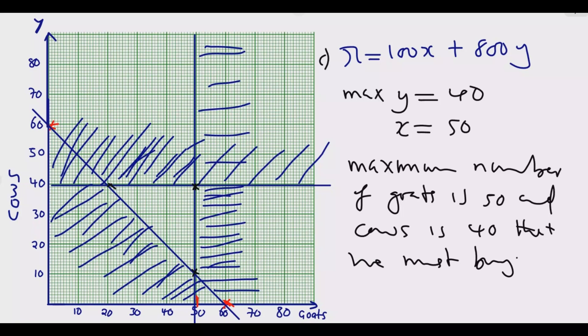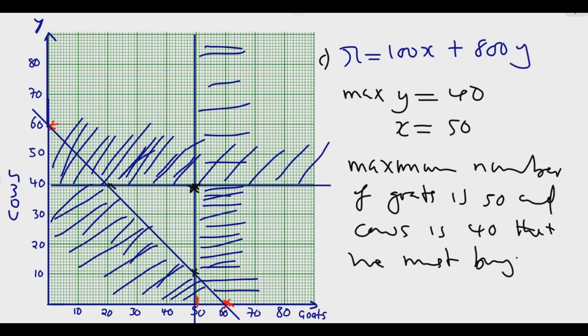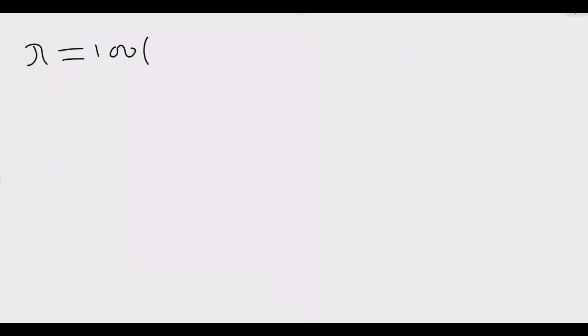Then when he buys that, what's the maximum profit? So now at this point we can find that profit. We just substitute. So in this function, we are going to have profit is equal to 100 times x. What is x? x at the maximum point is 50. So we put 50, then plus 800 times y. What is y? y is 40. Then 100 times 50 is 5,000 plus 8 times 4 is 32, plus those 3 zeros, so it's 32,000. Then we add this, we're going to get 37,000 as the profit. Now this profit is the maximum profit that you can get. You will not get any other profit other than that.